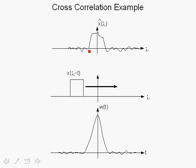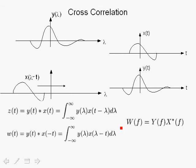Here is an example of cross-correlation: a pulse corrupted by noise is cross-correlated with the original pulse. As the pulse moves under the received pulse, the cross-correlation increases, peaking when the pulse falls right underneath the received pulse, then decreasing as it moves away. This is actually a matched filter example. The key relationship is that cross-correlation in the time domain corresponds to multiplication by the conjugate of the reference signal in the frequency domain.